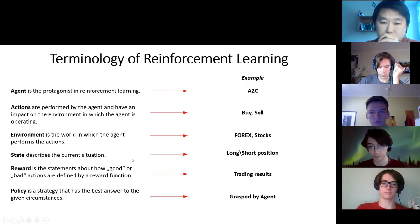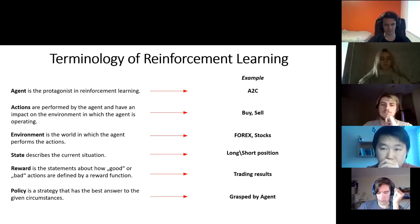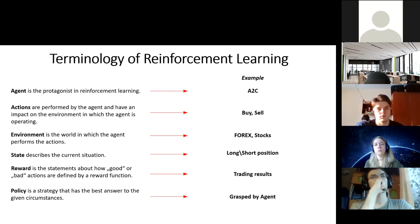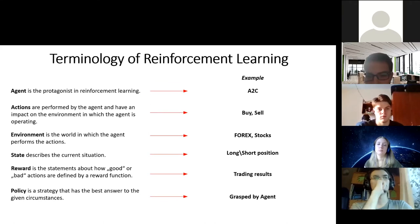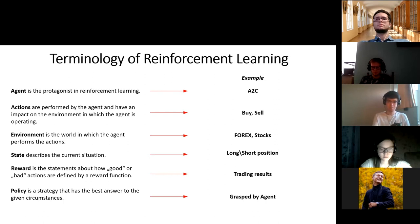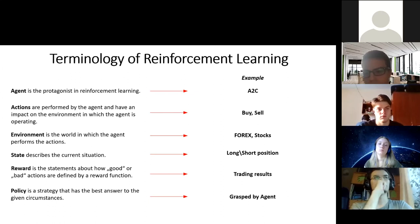We have given definitions of important RL terms. The agent is the main actor in reinforcement learning. Actions are performed by the agent and affect the environment in which it operates. The environment is the world in which the agent performs its actions. States describe the current situation and rewards are statements about how good or bad actions are determined by the reward function. And policy is the strategy that best suits the circumstances.